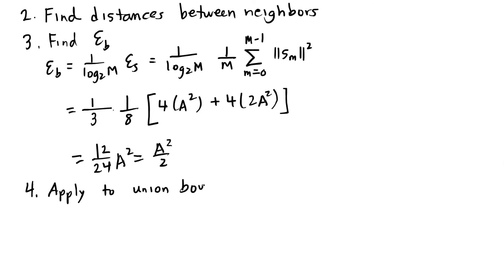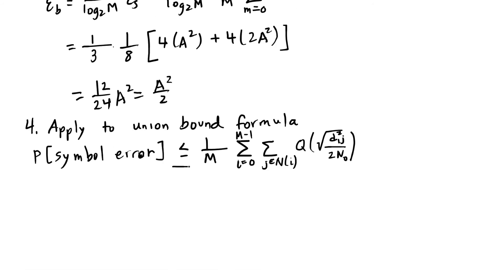Union bound formula I've copied here from above. Don't forget the less than or equal to sign here, because we are doing a bound. It's not an equality. And I have m equals 8. I'm going to simplify this double sum. So for the symbols that are on the axes, those symbols have two neighbors at a distance of a. So I'll end up with a 2Q of square root of a squared divided by 2n0.